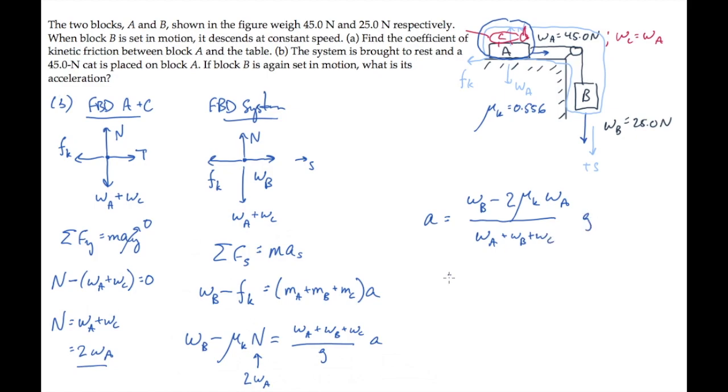We know all of those values, so we can substitute them and calculate. When you do this, you find that the system's acceleration after the cat's laid on it is minus 2.13 meters per second squared. That negative sign tells you the acceleration is in the direction opposite the motion, so it's slowing down as time goes by.